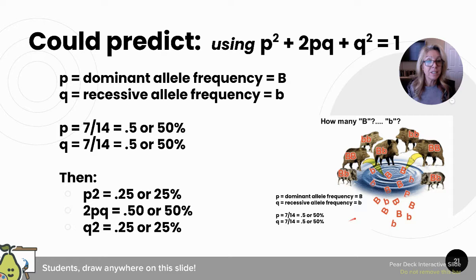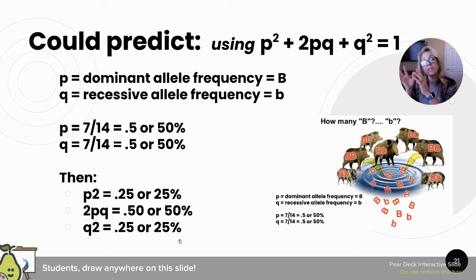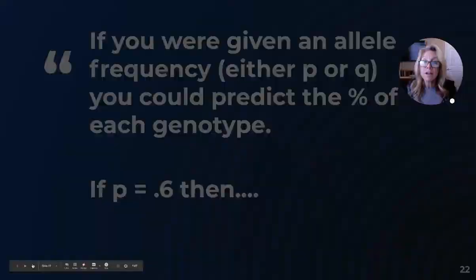You can predict, using these equations and knowing the frequency of P and Q, what you would predict in your population. P² = 0.5 × 0.5 = 25%. Getting a heterozygote is 50% because you could pull out P then Q, or Q then P — so it's 2PQ. That gives 50% heterozygous and 25% homozygous recessive. You can start with allele frequencies and predict your population, or analyze your population and then find the allele frequencies.